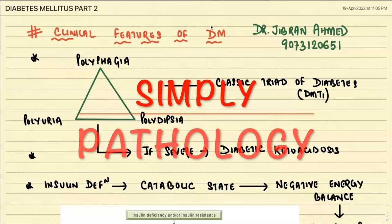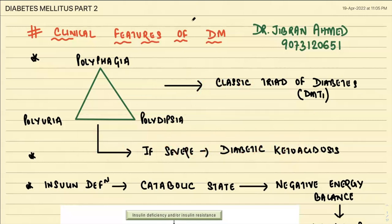Welcome back to Simply Pathology. Today we are going to continue with part two of diabetes mellitus. In the previous lecture, we covered the basics, classification, diagnostic criteria, types, and pathogenesis of type 1 and type 2 diabetes mellitus, including the role of obesity and insulin resistance. Today we will discuss clinical features, acute and chronic complications of diabetes mellitus, and their pathogenesis.